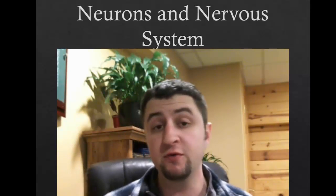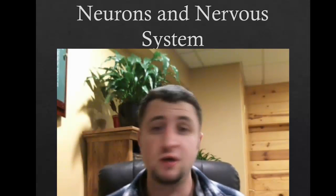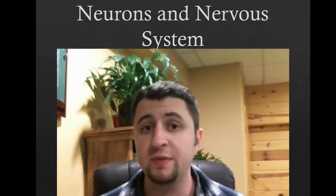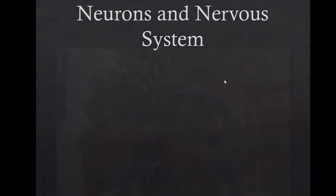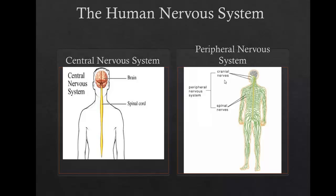I'm going to go ahead and remove my face for a little bit because there are some big pictures up on the screen. There are two parts to the nervous system: there is the central nervous system and there is the peripheral nervous system. The central nervous system — think center — that includes things like your brain and your spinal cord.